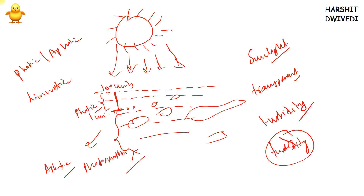Why does this turbidity occur? It happens due to eutrophication — this is one important factor. Eutrophication can be man-made, that is cultural eutrophication, or it can be natural eutrophication. I have also made a video on eutrophication; you can find it in my environment and ecology playlist. One thing you should keep in mind: if you want to learn environment and ecology, you have to connect the topics with each other. You have to connect the dots, intermingle the concepts, and associate one concept with another. The moment you start doing that, you will start understanding environment and ecology.